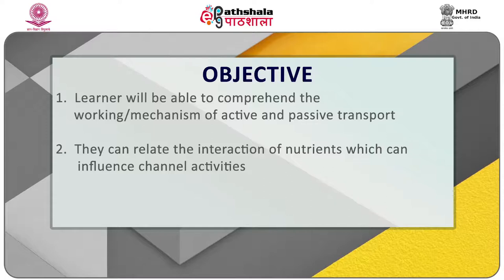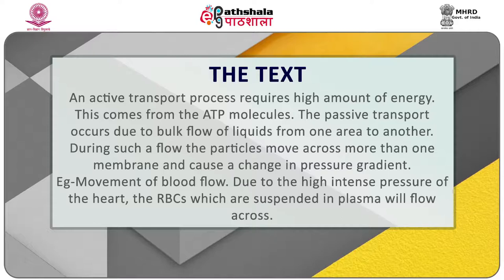Learners would be able to relate with the interaction of nutrients which can influence the channel activities. Active transport process requires a high amount of energy, which comes from ATP molecules. The passive transport occurs due to bulk flow of liquids from one area to another. During such a flow, the particles move across more than one membrane and cause a change in the pressure gradient. The best example is movement of blood flow due to the high intense pressure of the heart, where RBCs suspended in the plasma will flow across.